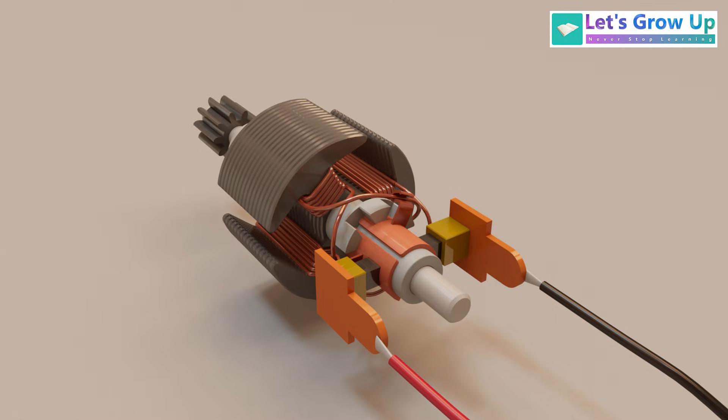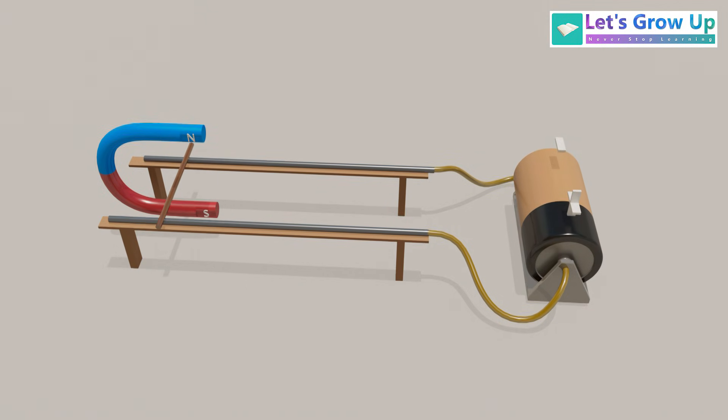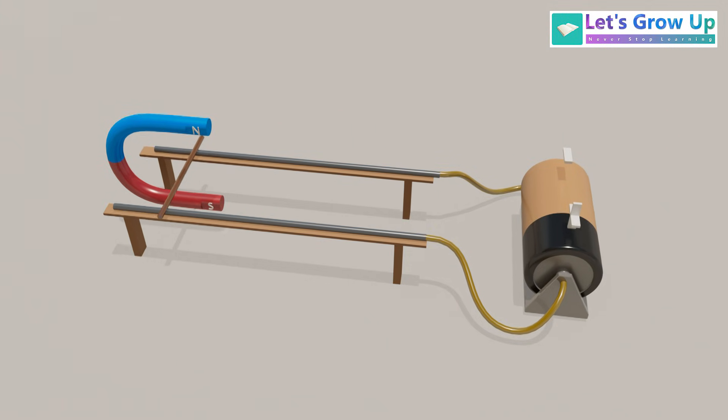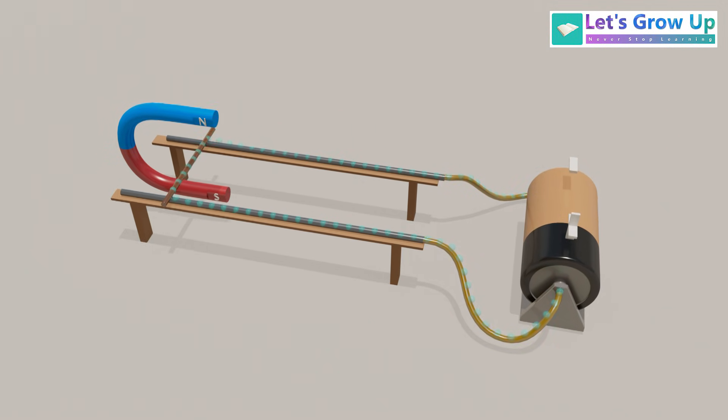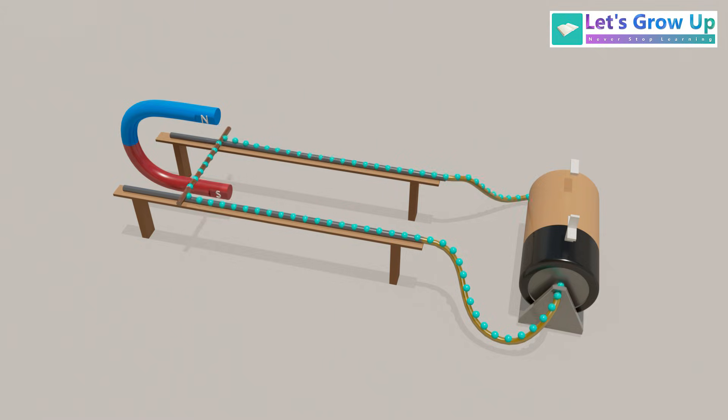The DC motor works based on the principle of the Lorentz force, or the motor effect. We will learn this with a simple example. This principle states that when a current carrying conductor is placed in a magnetic field, it experiences a mechanical force.